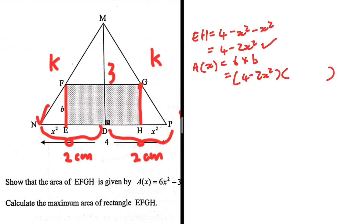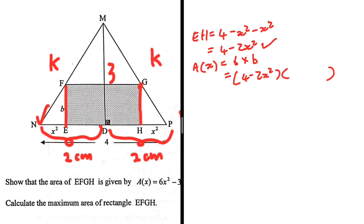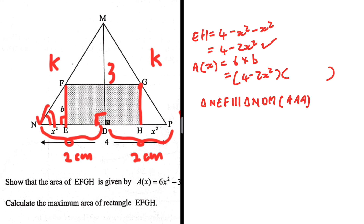In triangle NDM we have a 90-degree angle, and in triangle NEF we also have a 90-degree angle. They also share a common angle at N. So triangle NEF is similar to triangle NDM by AA similarity — two pairs of equal angles, so the third angle must also be equal.